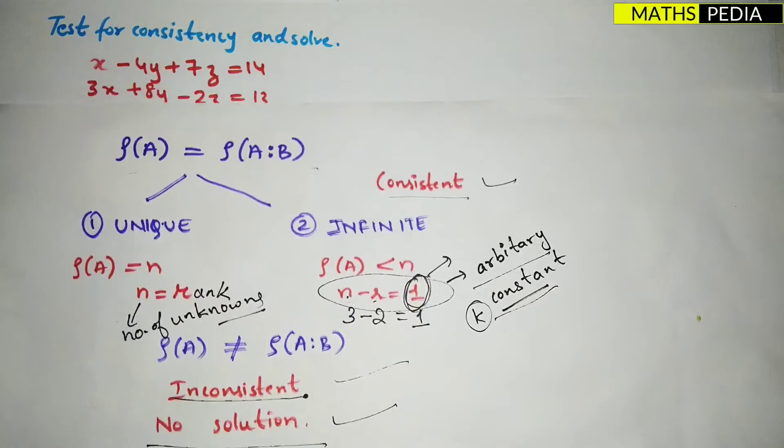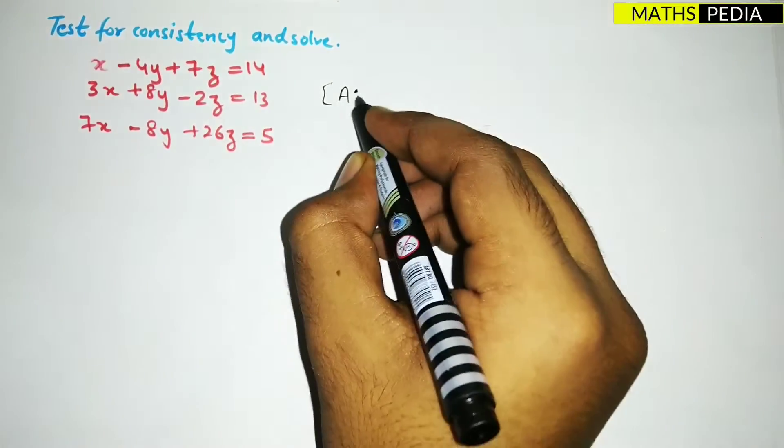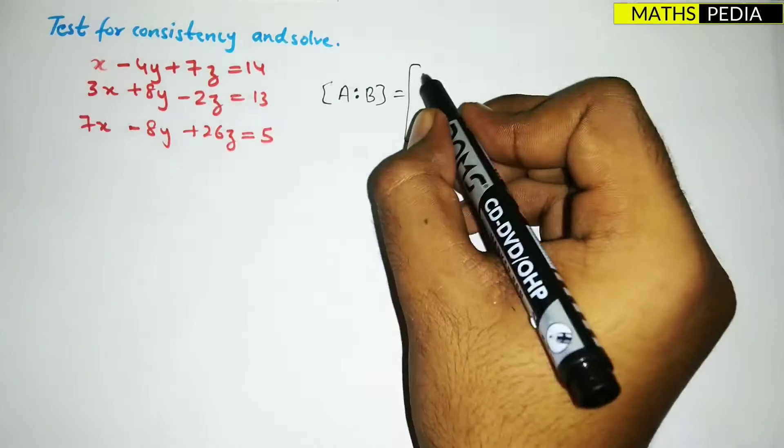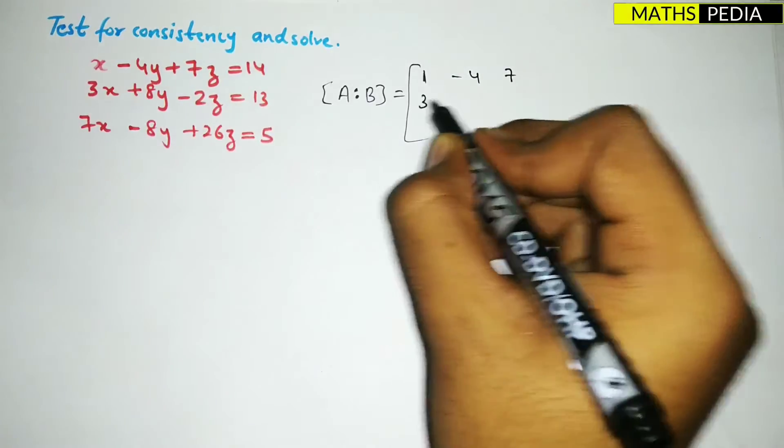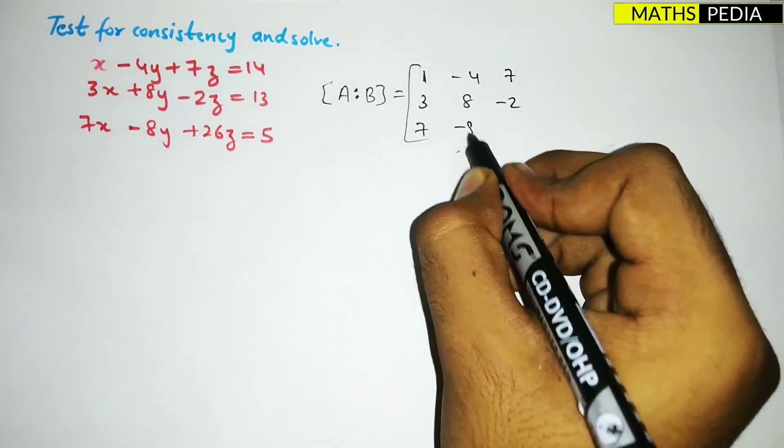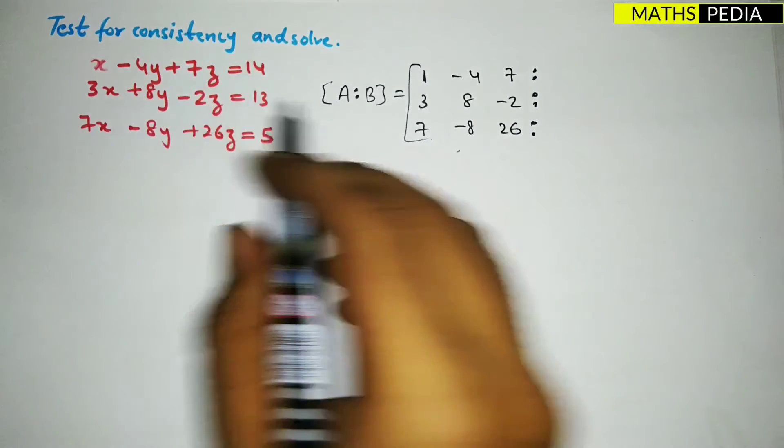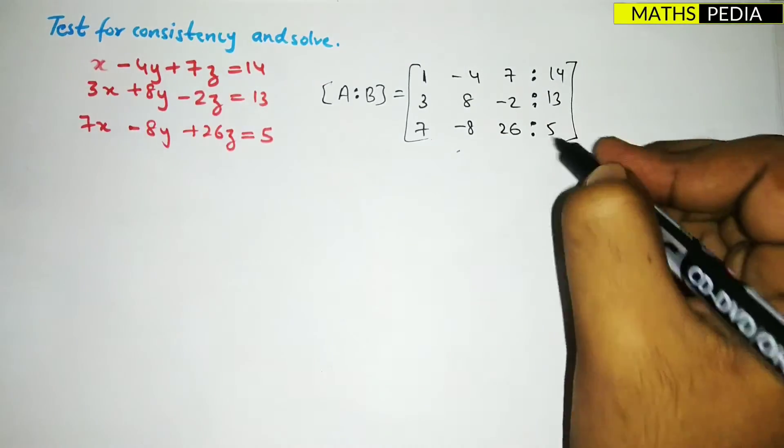First step is you have to form the augmented matrix, so the coefficients: 1, -4, 7, then 3, 8, -2, then 7, -8, and 26. And here the B matrix will come, that is basically the constants on the right-hand side, so 14, 13, and 5.